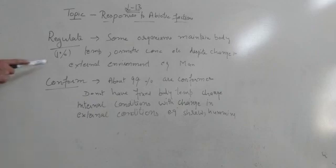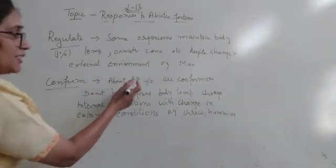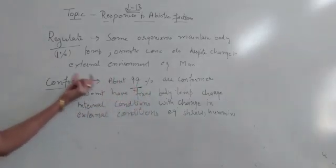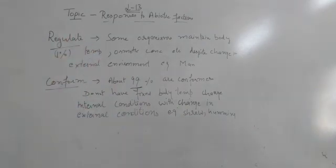If we talk about their percentage, what is the percentage of regulators? In your book it is not mentioned, but it is mentioned that conformers are about 99%. So if they are 99%, it means these are 1%. So indirectly they will ask. It is not given in the book. So conformers are 99%.